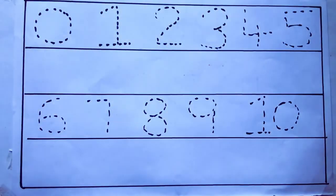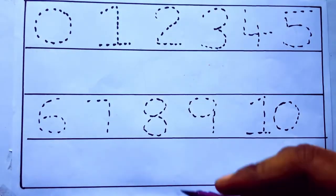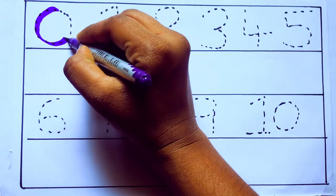Let's draw numbers. Violet color 0. Z-E-R-O.